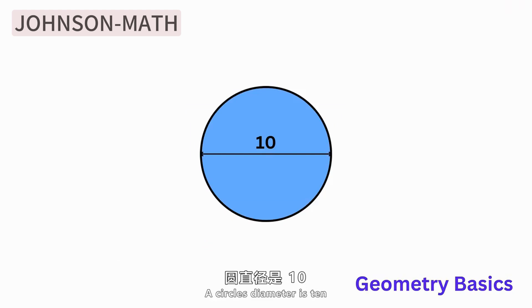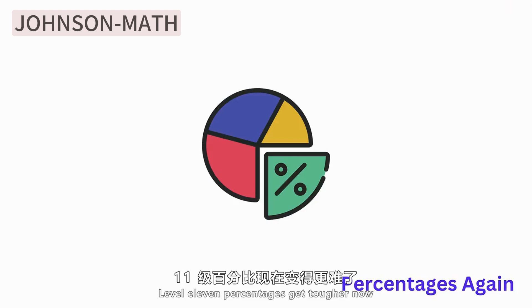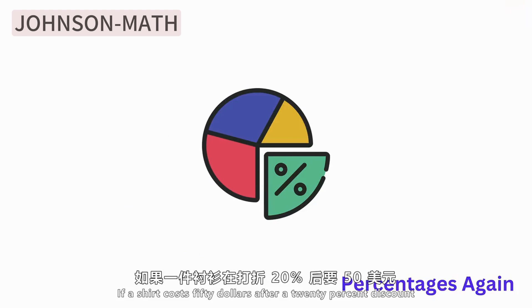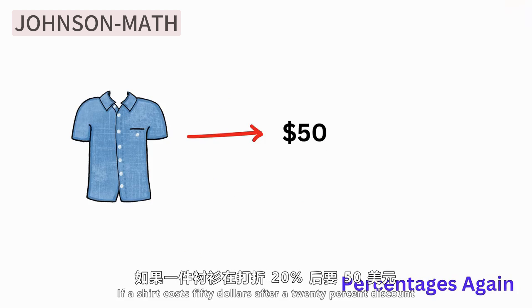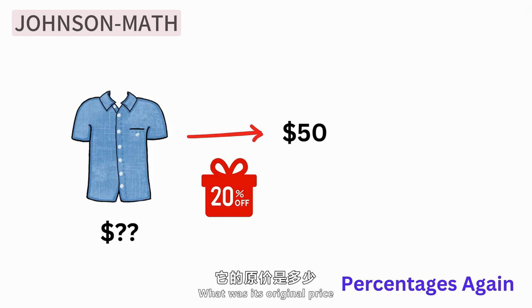Level 11, percentages are more difficult. If a shirt is sold for $50 after a 20% discount, what is its original price? The difficulty starts to become interesting.